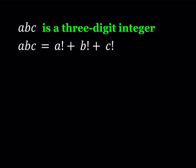Hello everyone. In this video we're going to be solving a factorial equation. We have ABC as a three-digit integer and it is equal to the sum of the factorials of its digits.